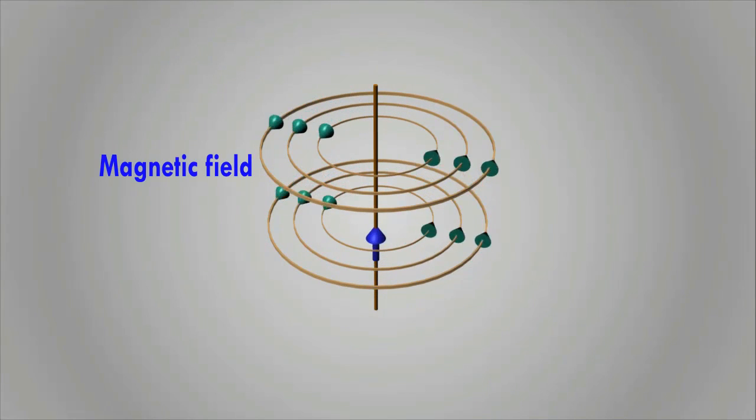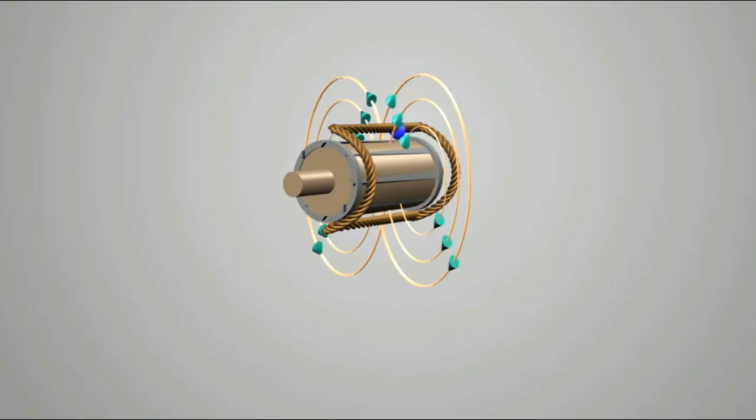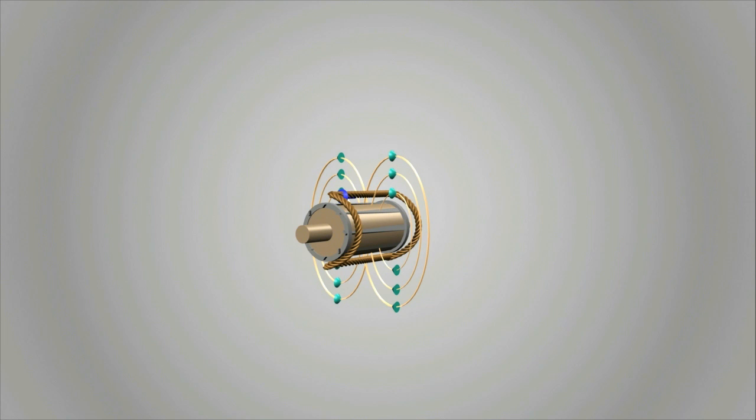Similarly, when current flows through the stator coil, the magnetic field around the coil is also created. Due to this stator current, another EMF is induced in the rotor and the rotor starts rotating.